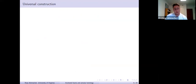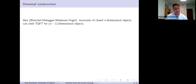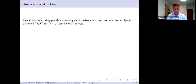Let me now describe the universal construction. It's a pretty far-reaching idea. The main idea — usually attributed to BHMV — is that invariance of closed n-dimensional objects can give you a TQFT for (n−1)-dimensional objects. This is intentionally vague because it's quite a general procedure.